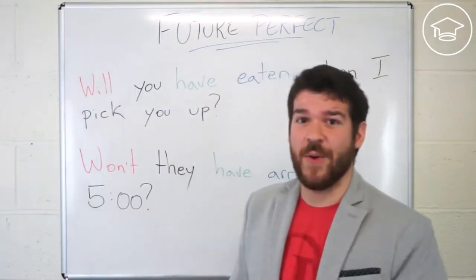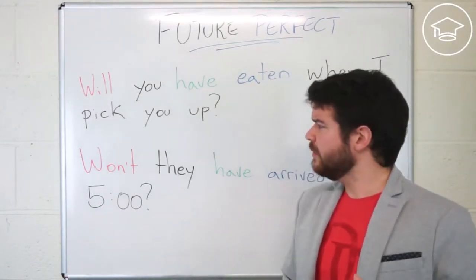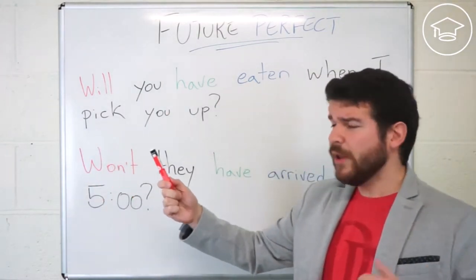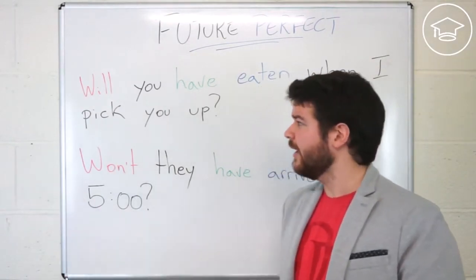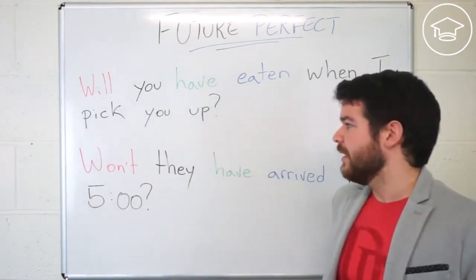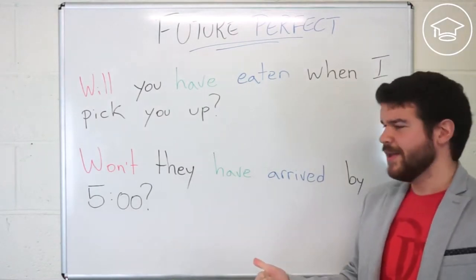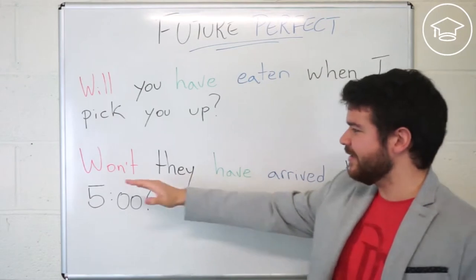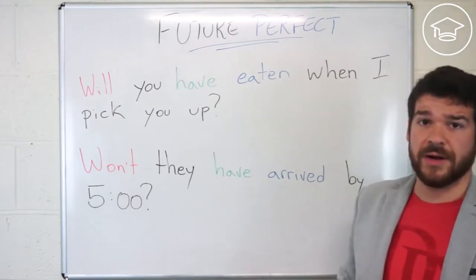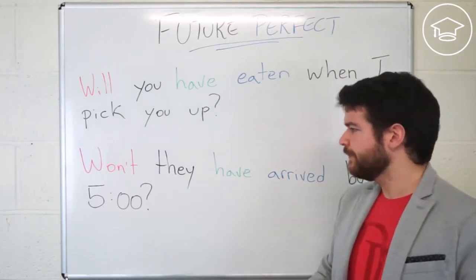So let's take a look at questions in the future perfect. Will you have eaten when I pick you up? 'Eaten' — third column, remember that. Will you have eaten by then? Will you have done this action by the time I pick you up? Won't they have arrived by five? This is a negative question. Won't they have arrived by five?